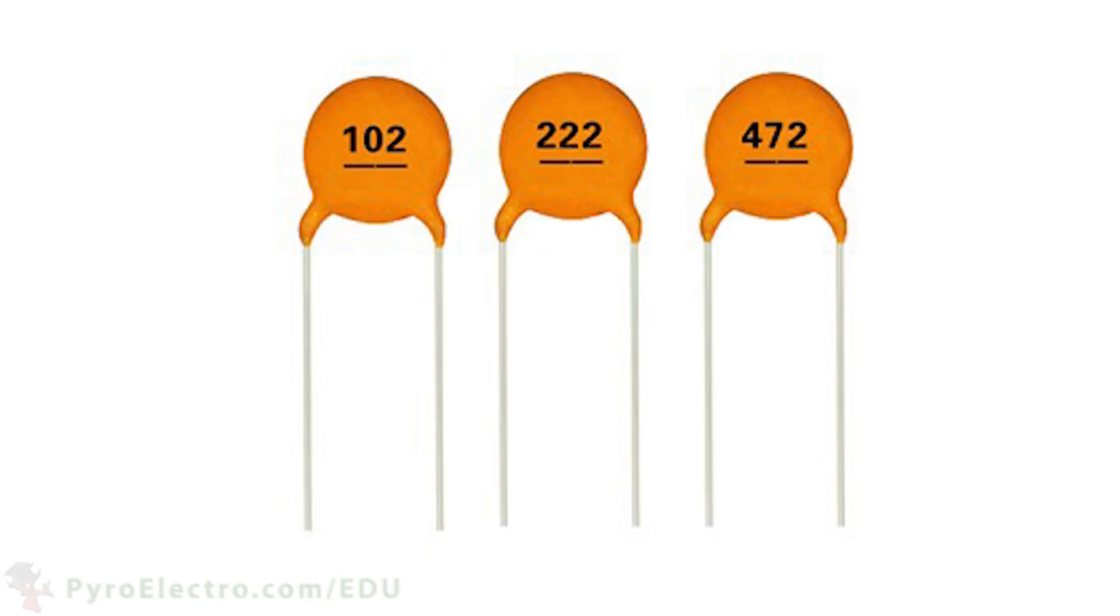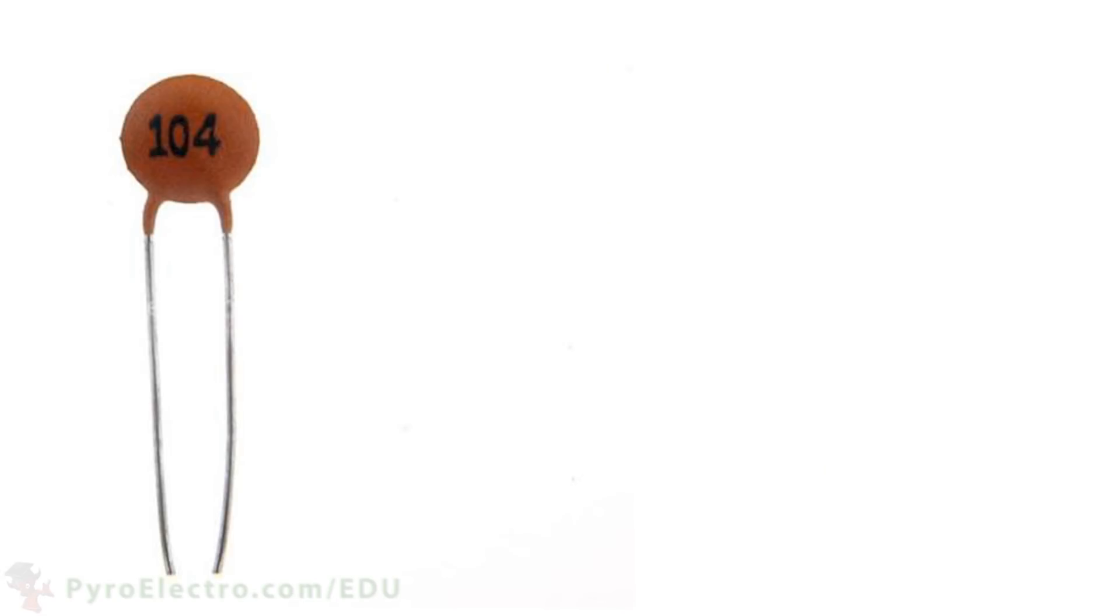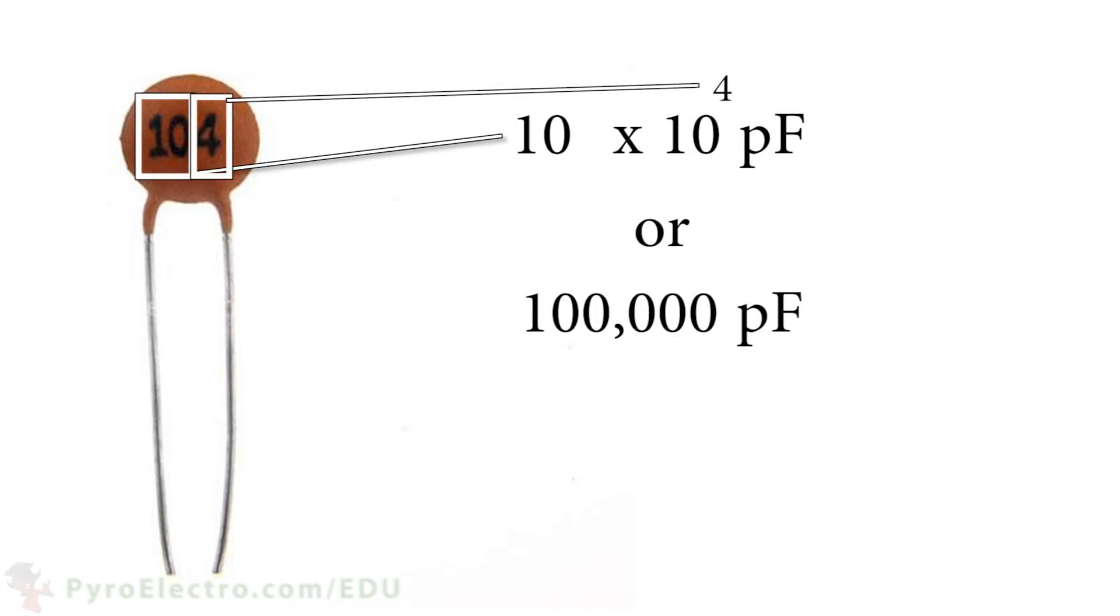The through-hole capacitors are all marked with three numbers and a letter that represent the capacitor value and tolerance. The way to calculate the capacitance is exactly the same as with resistors. The first two numbers are the significant figures, and the third number is the exponent multiplier. However, the difference is that the resulting number is in picofarads, so for this capacitor, 100 nanofarad, or 0.1 microfarad.